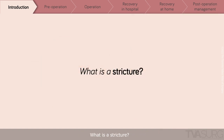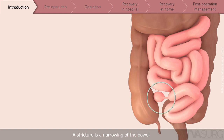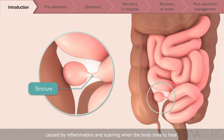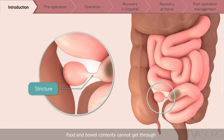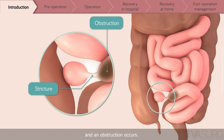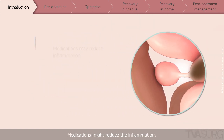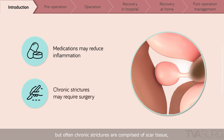What is a stricture? A stricture is a narrowing of the bowel caused by inflammation and scarring when the body tries to heal. When a stricture becomes too narrowed, food and bowel contents cannot get through and an obstruction occurs. Medications might reduce the inflammation, but often chronic strictures are comprised of scar tissue, and surgery may be recommended to remove the stricture.